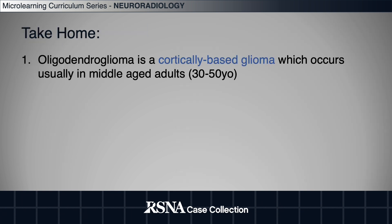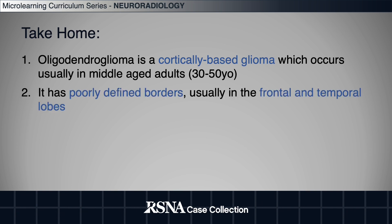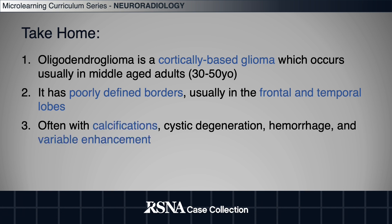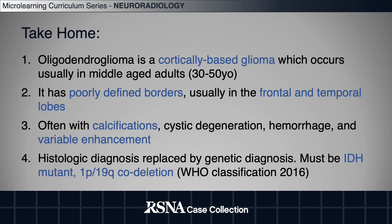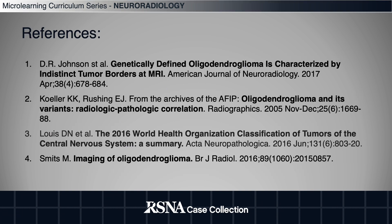The take-home points: this is a cortically-based tumor which usually occurs in middle-aged adults. On imaging, it has poorly defined borders, usually found in the frontal and temporal lobes. It often has calcifications, cystic degeneration, hemorrhage, and variable enhancement. The diagnosis is genetic and must be IDH mutant and 1p19q codeleted. Here are a few important references on oligodendrogliomas.